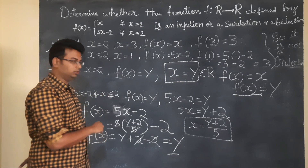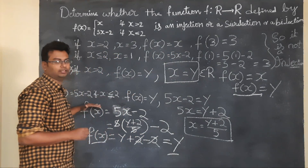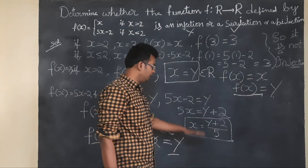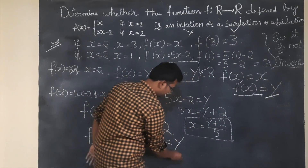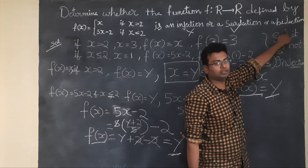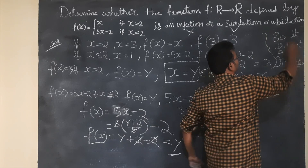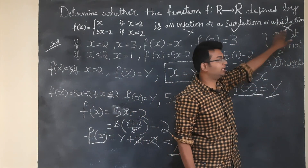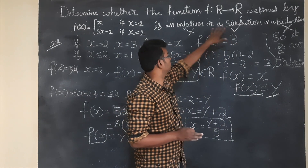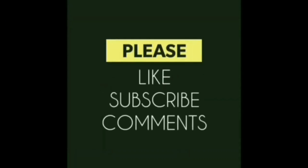Both conditions have a valid inverse, so a preimage exists for every element. Therefore it is not injection, but it is a surjection. Since it is not an injection, it cannot be a bijection — bijection requires both injection and surjection. So the function is only a surjection.